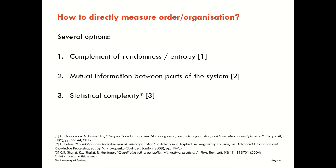The third potential candidate for measuring order or organisation directly at a system level is the statistical complexity. The use of this for looking at self-organisation of a system over time is suggested by Shalese and company in their paper. I'm not going to go into precisely how this concept is measured in this course — it's out of scope for us. If you want to look at that, I can point you to that paper, which will in turn point you to the original paper presenting the statistical complexity measure by Young and Crutchfield in 1989.